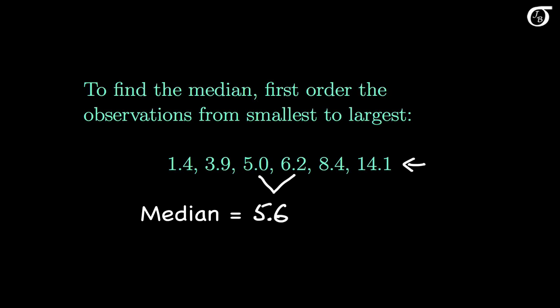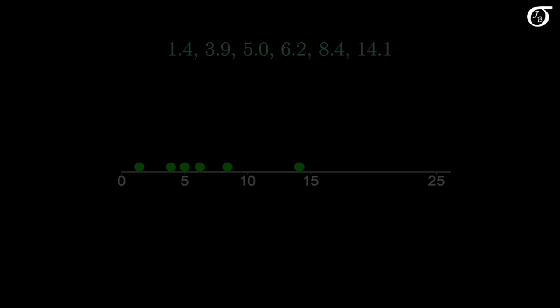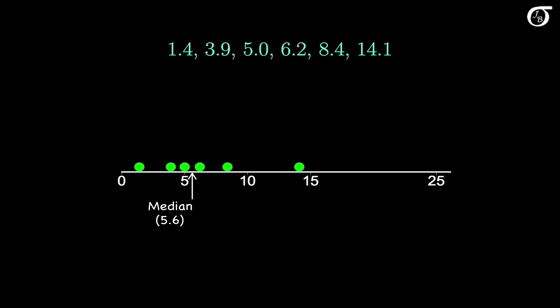Let's look at those values on a number line. Here's a dot plot of the observations. The median is right here at 5.6, halfway between the two middle observations. The mean is a little bit larger at 6.5.